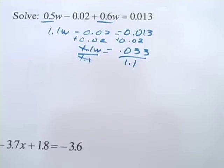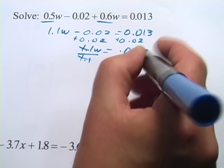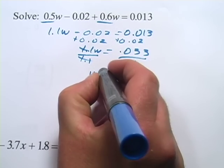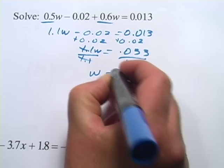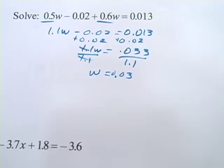And you can use your calculator. Here, 0.033 divided by 1.1. And this equals 0.03. So there is our answer for the first one.